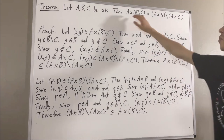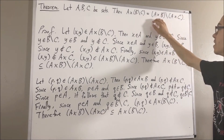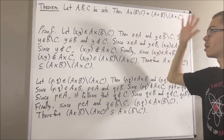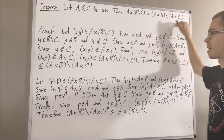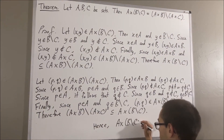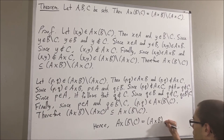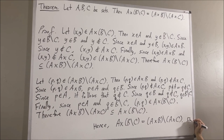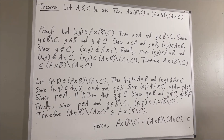We have shown this set is a subset of this set, and this set is a subset of this set. Together, that tells us that these two sets are equal — and that is exactly what we wanted to prove. So this completes the proof. That's pretty much it for this video. Thank you.